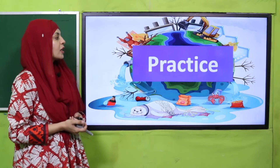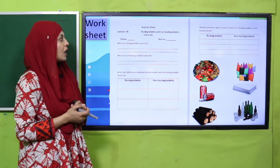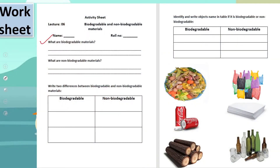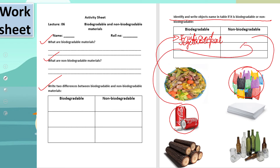For practice, you can download the worksheet from the description box below this video or get it in print form. Write your name and class, then answer: What are biodegradable materials? What are non-biodegradable materials? Write two differences between them. Identify and write object names in the table as biodegradable or non-biodegradable — for example, fruit peels are biodegradable; plastic, cans, and glass bottles are non-biodegradable; wood, cloth, and paper are biodegradable.